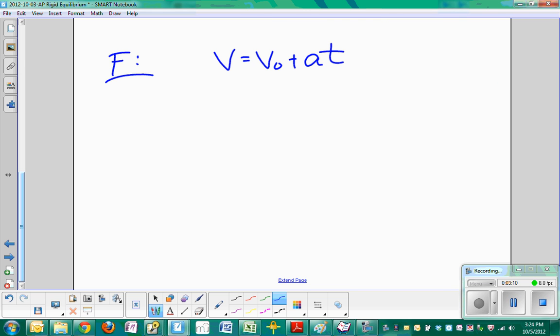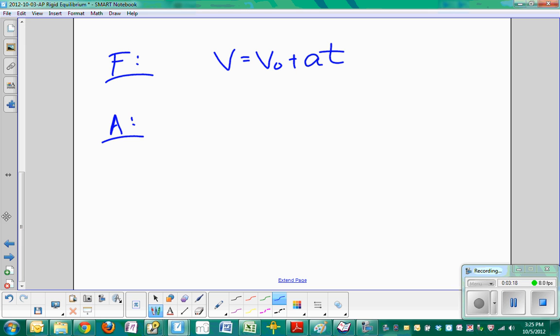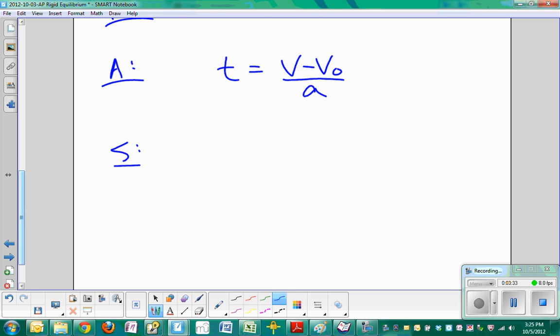Now what we have to do is this time we do have to do some algebra because we're looking for the amount of time that this is going to take. So we're going to have to just rearrange this equation. So time is going to be equal to V minus V0 over the acceleration. Now we're going to go ahead and solve by plugging in the known values as given and simplifying.